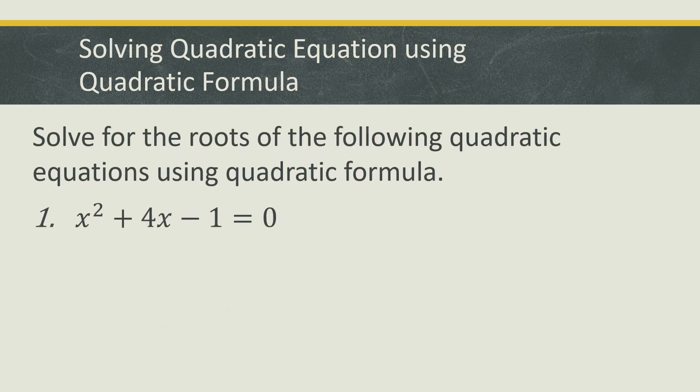Let's start to solve number 1: x squared plus 4x minus 1 is equal to 0. To solve this using the quadratic formula, we always need to know the values of a, b, and c. In our first example, the value of a is 1, the value of b is 4, and the value of c is negative 1.